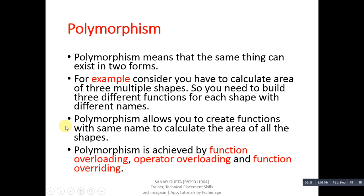Polymorphism is achieved by function overloading, operator overloading, and function overriding. All three of these features will be discussed later in separate tutorials.